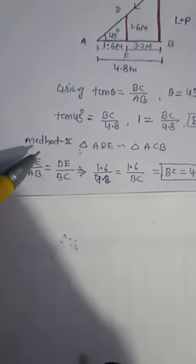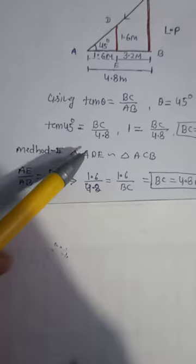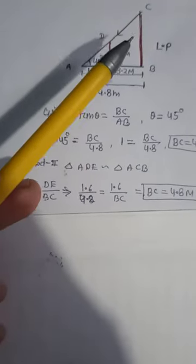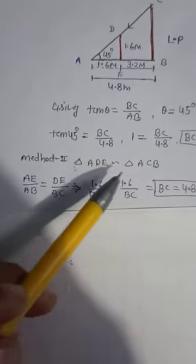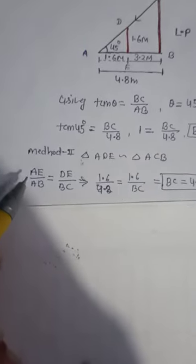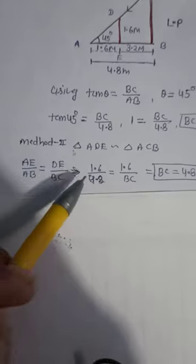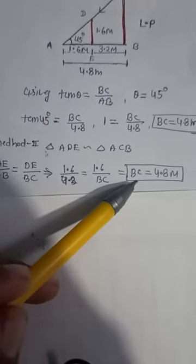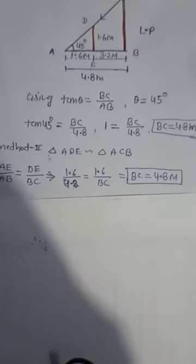If you want, you can also solve this using similar triangles. You can see that triangle ADE and triangle ACB, both are similar triangles as I mentioned over here. So you know that if triangles are similar, the sides will be proportional. By this concept you can solve. Again, the answer will be the same, BC will be 4.8 meters.